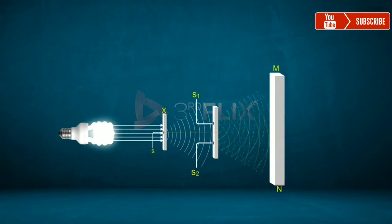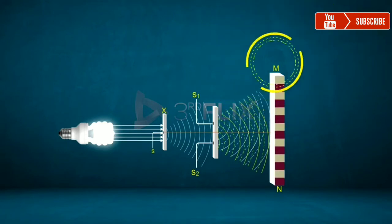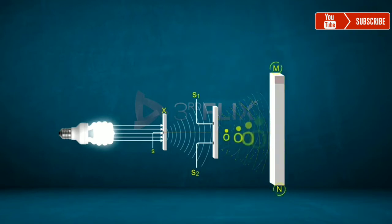This type of bright and dark bands may be observed regularly on the screen MN, forming an interference pattern. In the figure, we may observe bright bands and dark bands.